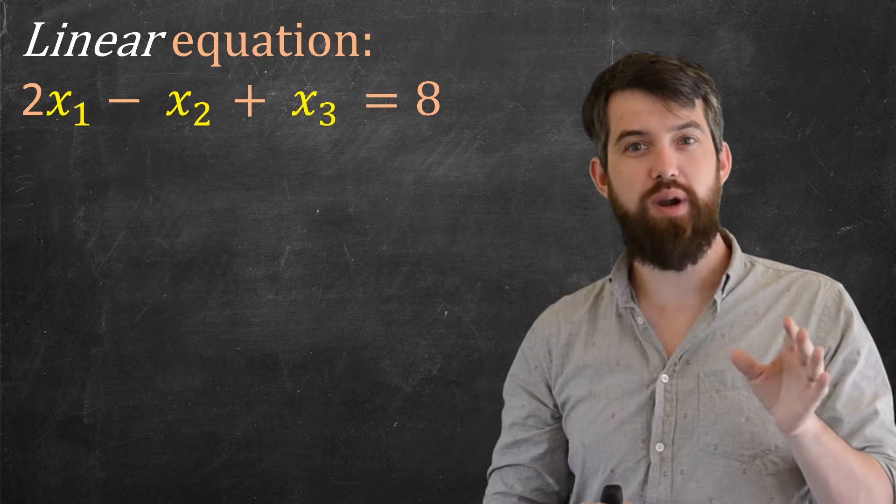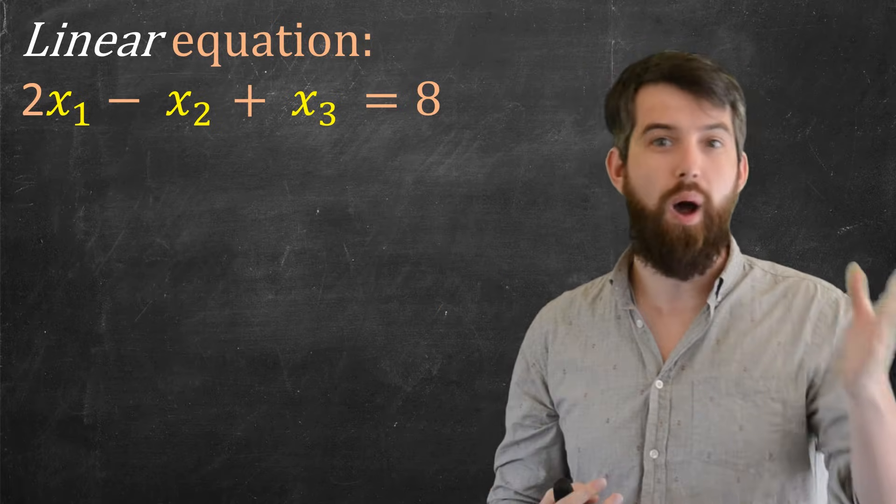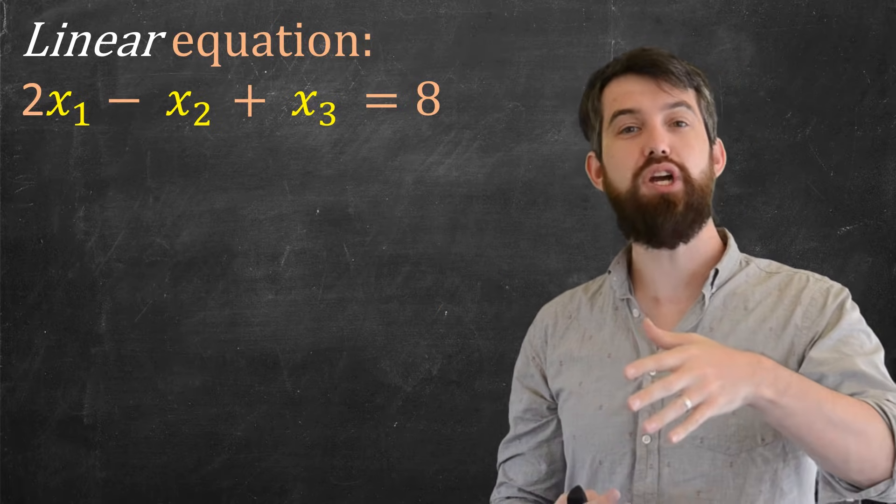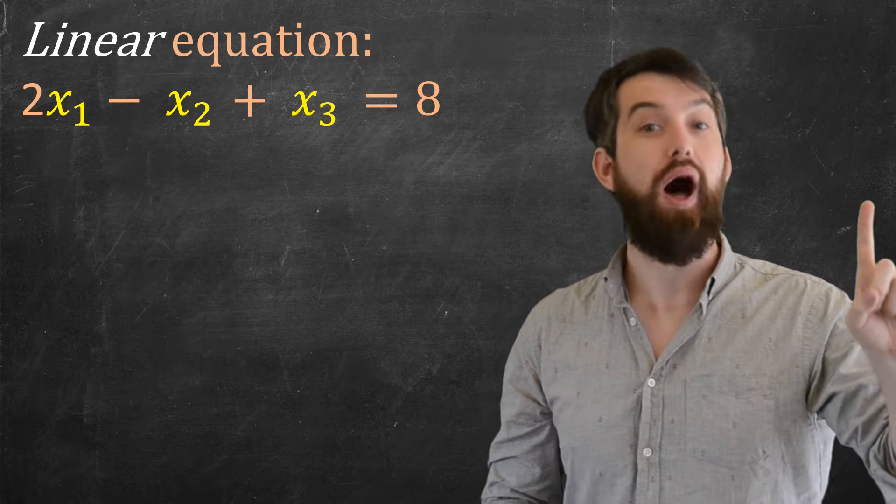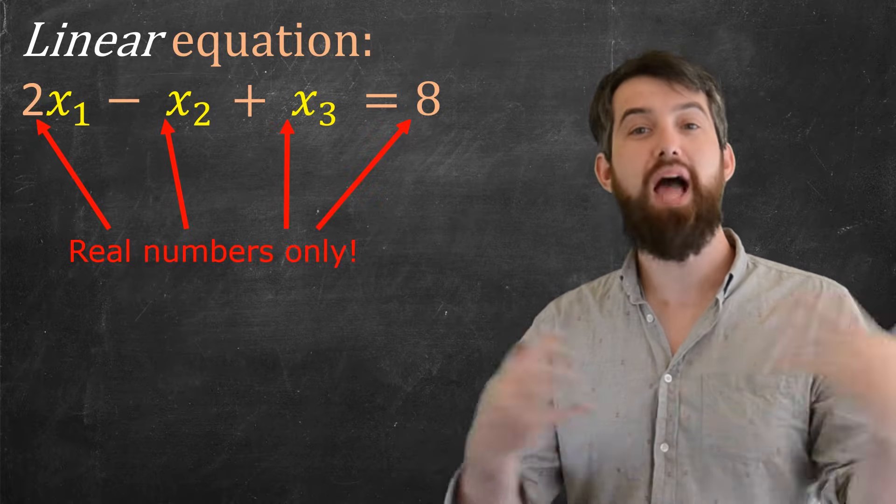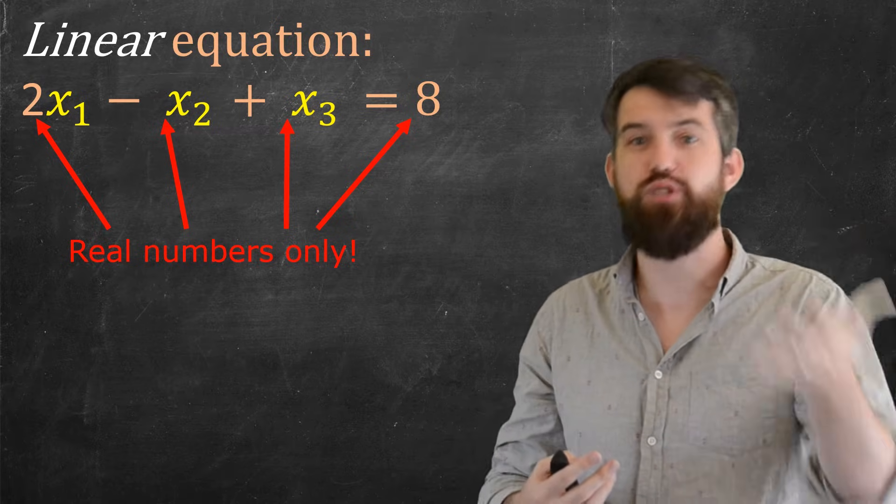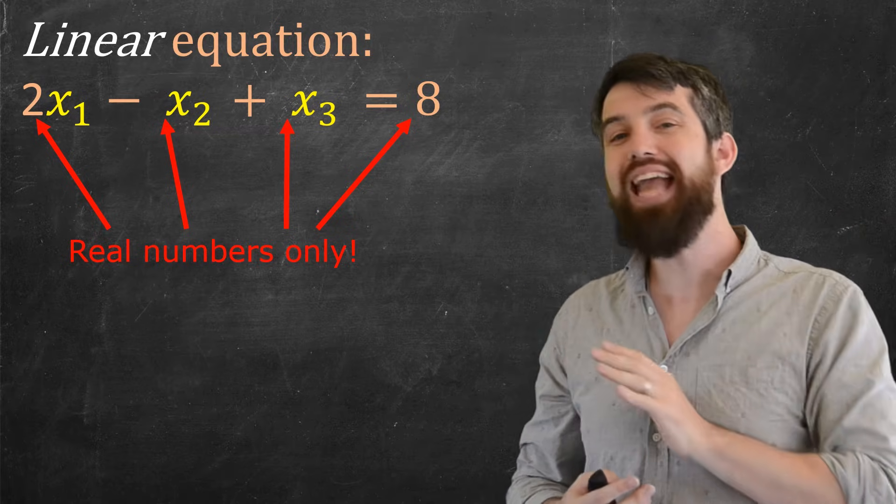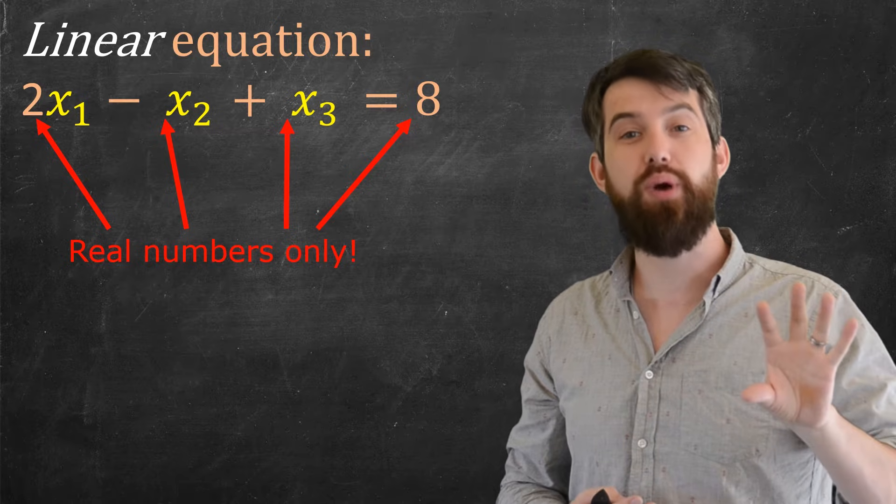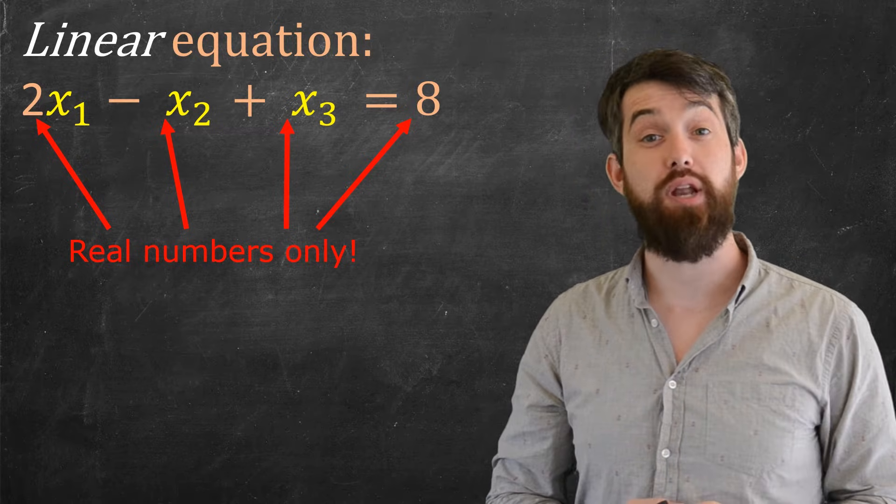What we're going to study in this course are these linear equations, equations where every variable like x1, x2, x3, it just occurs to the power of 1. I might multiply those variables by various coefficients, numbers like 2 and minus 1 and 1 and 8, but any variable is only going to occur to the power of exponent 1.